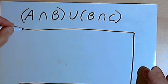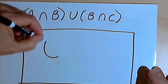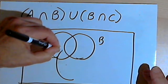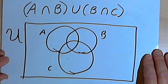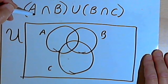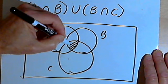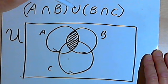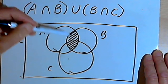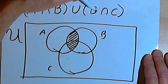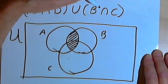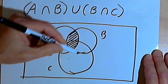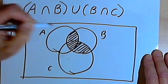Here's what that's going to look like. I have set A, set B, and set C as overlapping circles. I want the intersection of A and B — that's going to be the area where A and B overlap each other. And then I want the union of that with the intersection of B and C. The intersection of B and C is going to be the overlapping area for B and C.